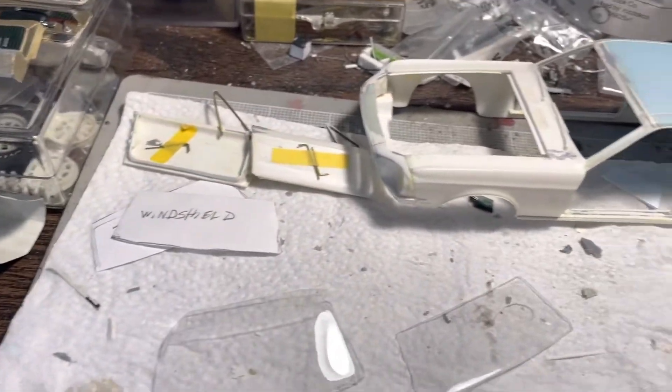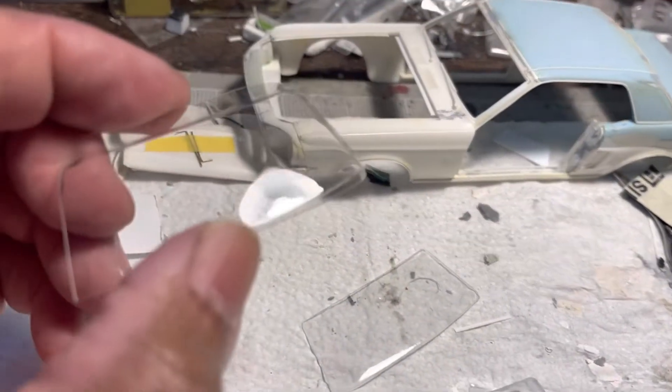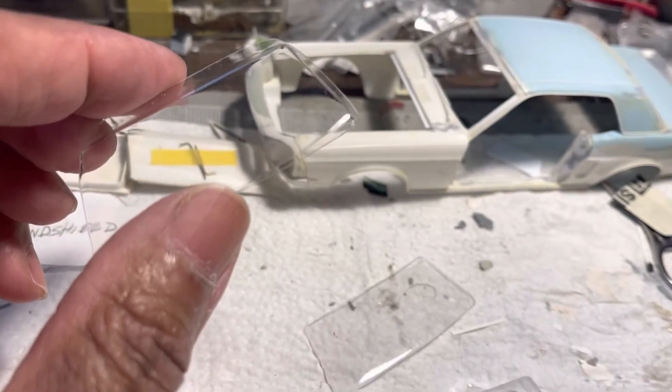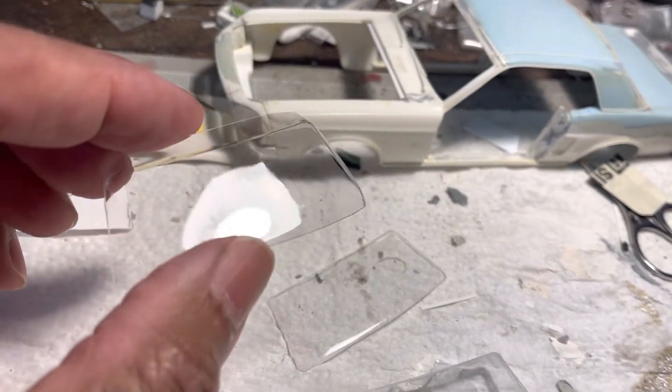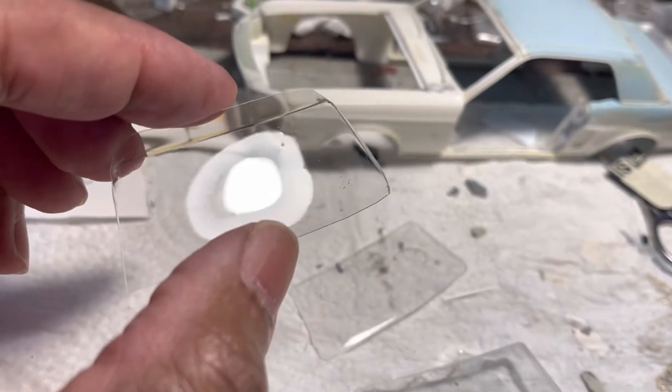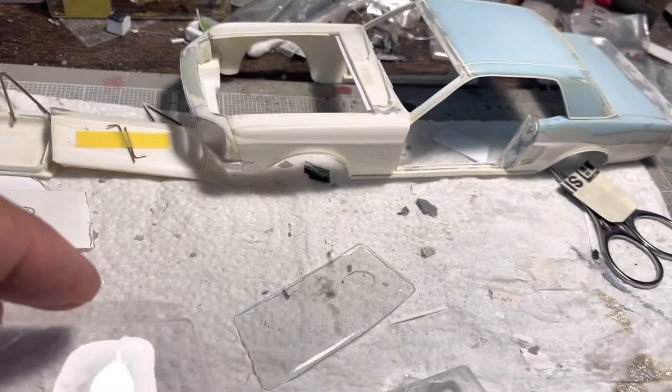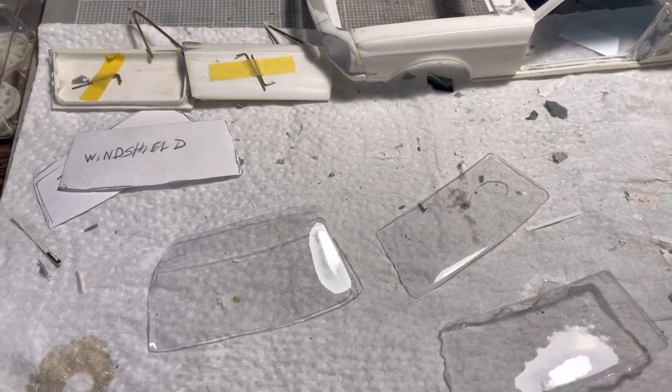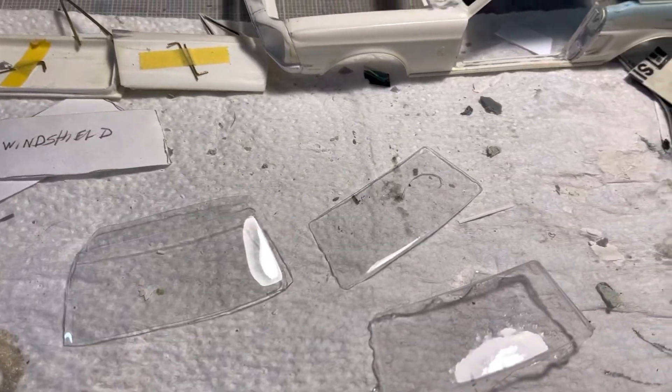Oh, oh. I almost forgot to tell you. The glass I'm using, what I'm using for glass here, is 20 thousandths PETG. 20 thousandths PETG sheet. Or, in other words, some places called VIVAK. V-I-V-A-K. It's all over the net. Do a search for it. eBay has it. Amazon might have it. There's certain companies out here that have it. You can get it.